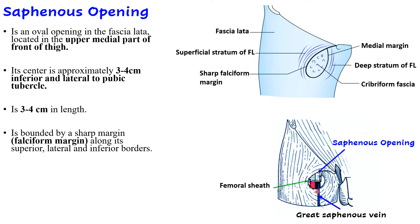The femoral vessels pass from the abdomen to the thigh behind the inguinal ligament, enclosed in the femoral sheath. The superficial stratum of the fascia lata is superficial to the femoral sheath, whereas the deep stratum is deep to the femoral sheath. This creates a gap — the saphenous opening — which allows the great saphenous vein, the main superficial vein of the lower limb, to drain into the femoral vein. That is why the opening is called the saphenous opening.